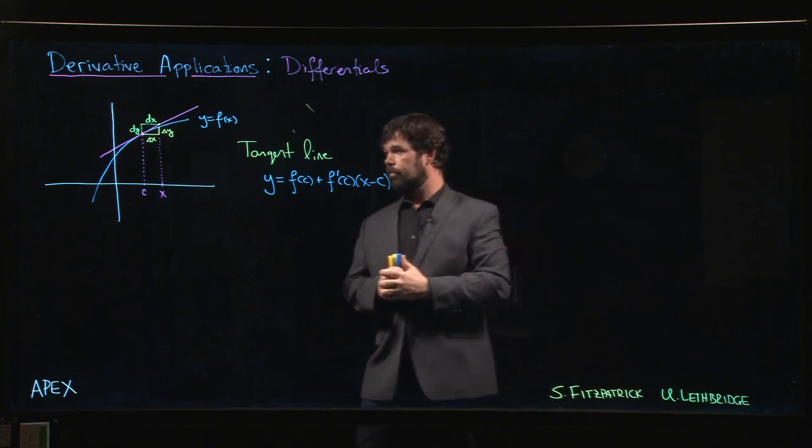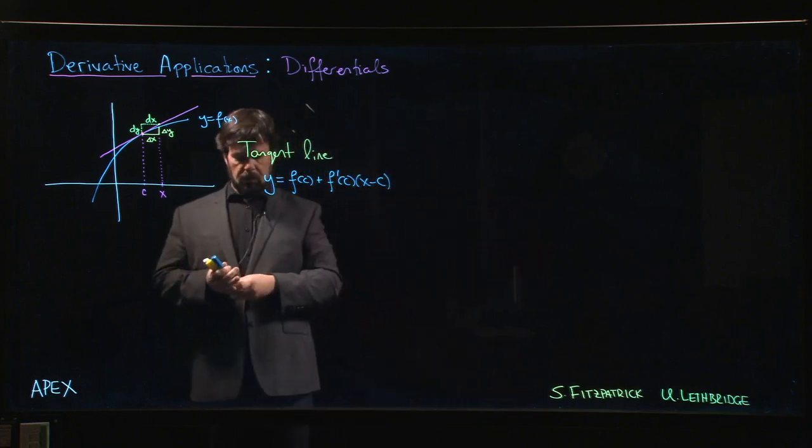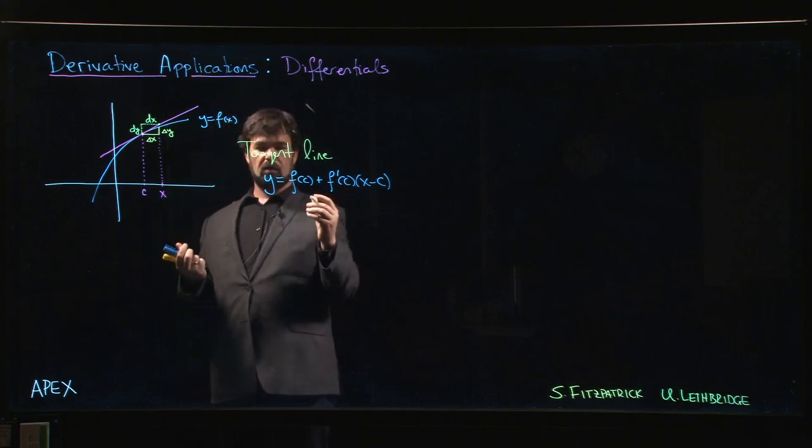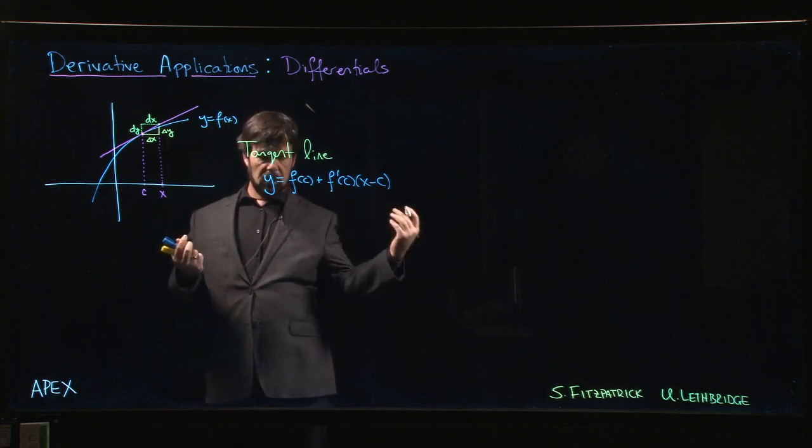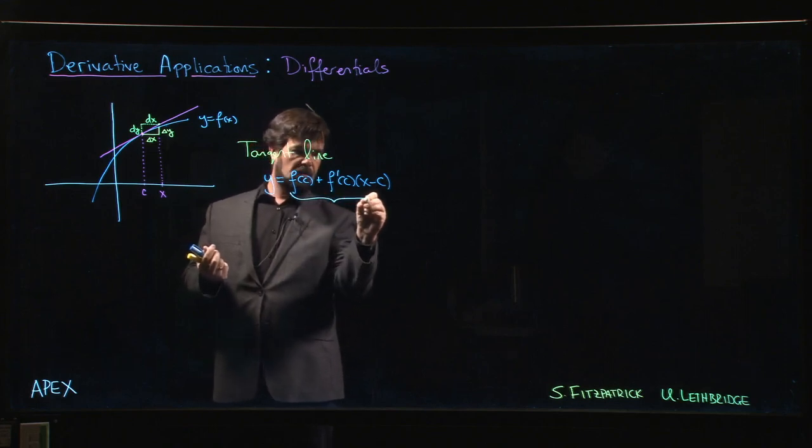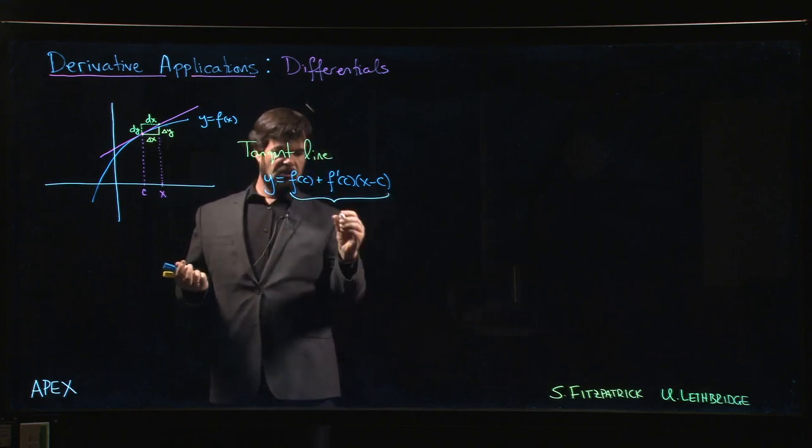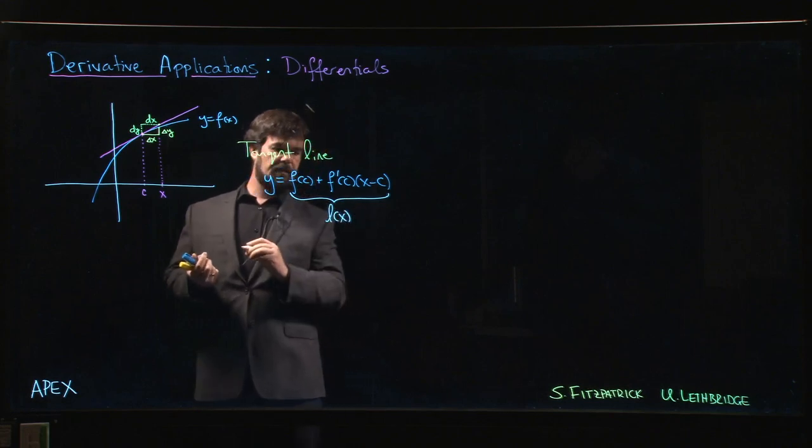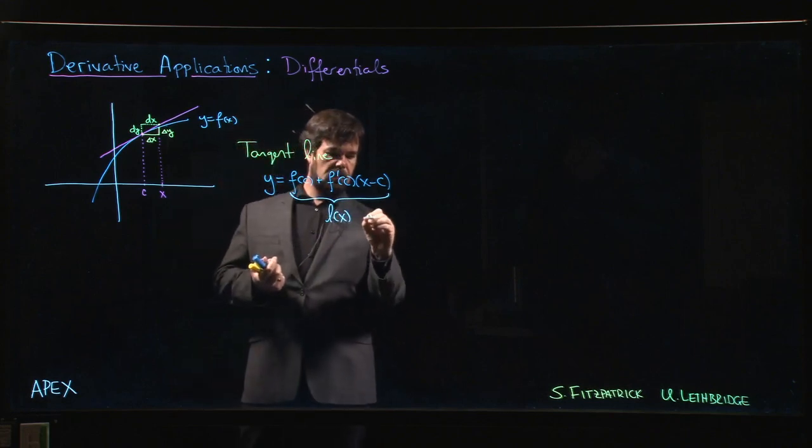The fact that those values are close together means this gives you a good linear approximation. The right-hand side of this equation is a function, so we might call it L of x. This will be the linear approximation.